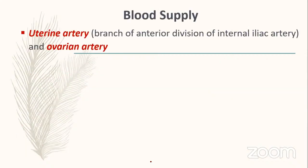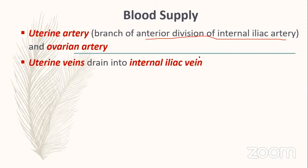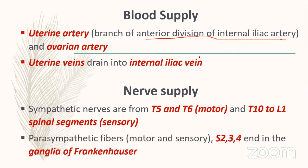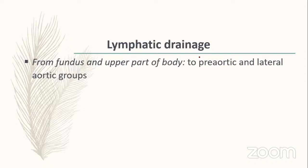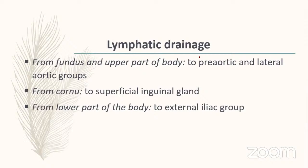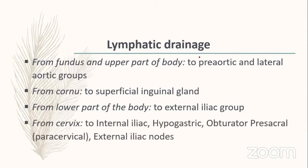Blood supply of the uterus: uterine artery — branch of the anterior division of the internal iliac artery — and ovarian artery. Uterine veins drain into the internal iliac veins. Nerve supply: sympathetic from T5–T6 (motor) and T10–L1 (sensory); parasympathetic S2–S4, ending in the ganglia of Frankenhäuser. Lymphatics from the fundus and upper body drain into pre-aortic and lateral aortic nodes; from the cornu to superficial inguinal glands; from the cervix to internal iliac, obturator, pre-sacral, and external iliac nodes.